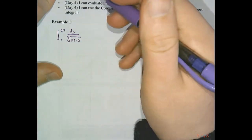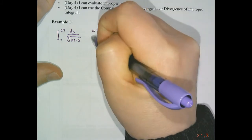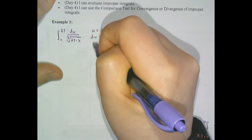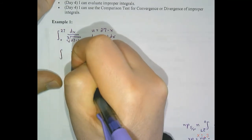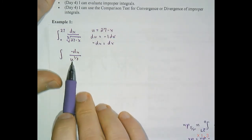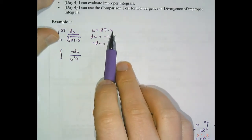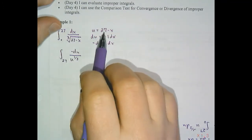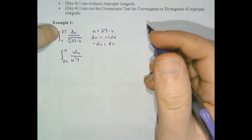Rewriting this in terms of u, I can do a u-substitution that enables me to rewrite the expression in terms of u. My expression now is negative du over u to the one-third. Because I've written this in terms of u, my boundaries also need to change. Plugging in the lower boundary of zero: 27 minus 0 is 27. Plugging in the upper boundary of 27: 27 minus 27 is zero. And we get our improper integral.